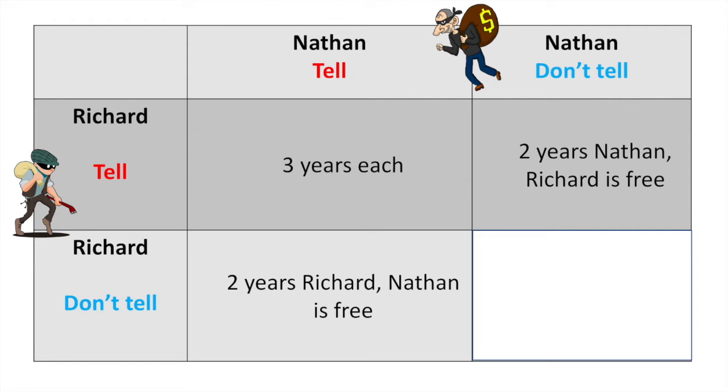Finally, both Richard and Nathan refuse to tell and end up with one year in prison each.